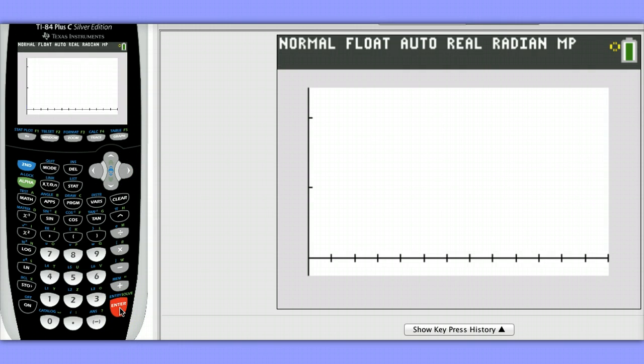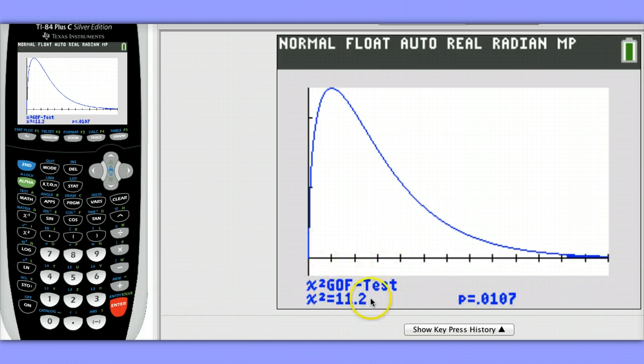Notice the chi-squared distribution is drawn for us, and we're also given our test statistic value and our p-value.